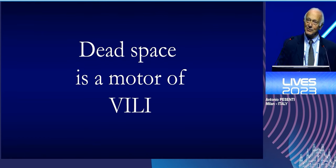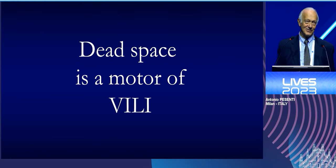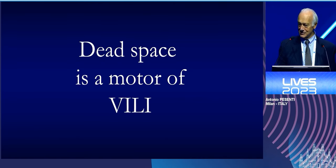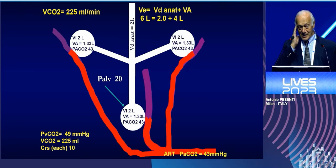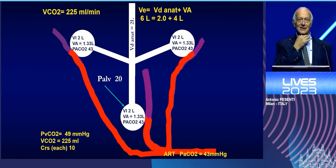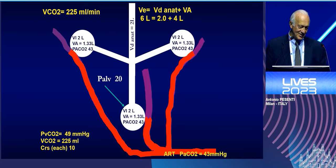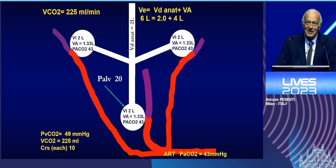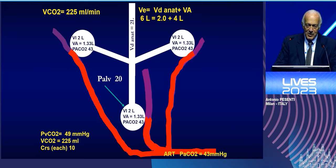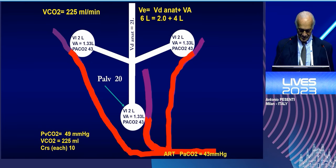Even in spontaneous breathing, it's not the ventilator — it's ventilation-induced lung injury. This is an ideal lung. We have three regions, three samples of the lung. We have an anatomical dead space of the airways, which do not participate in gas exchange.